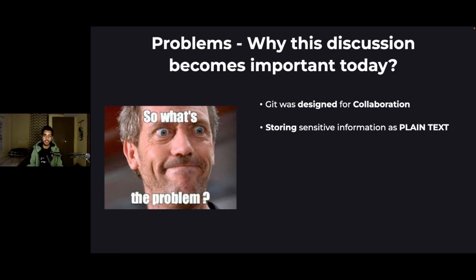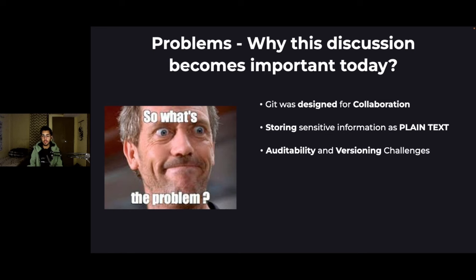The second problem is sometimes storing sensitive information as plain text. Sometimes we have the habit of quickly getting things done and storing secrets as plain text — sometimes unintentionally. This is definitely a potential security risk. When it comes to a typical GitOps workflow, version control is the king because Git is at the center, but we don't have a way to track changes for secrets the same way we can for code. This poses a challenge for conducting thorough audits and maintaining a version history of the evolution of our secrets.